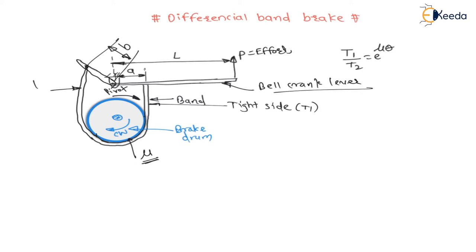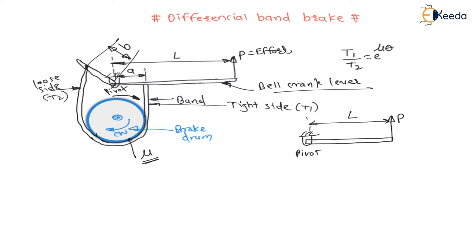This side is the loose side again — tension in this side is T2. If I draw the free body diagram of the bell crank lever: at distance l from the pivot, the effort P is applied. At distance a from the pivot, there is the tight side tension T1. On the other link, at distance b from the pivot, there is the loose side tension T2.